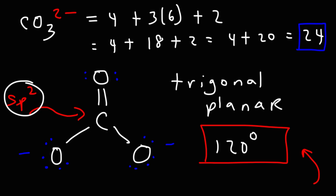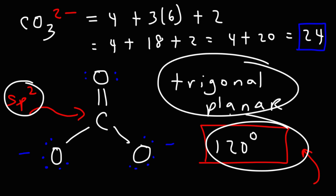So that's basically it for this video. Now you know how to draw the carbonate Lewis structure. You also know its molecular geometry, its approximate bond angle, and the hybridization at the central carbon atom. Thanks for watching.